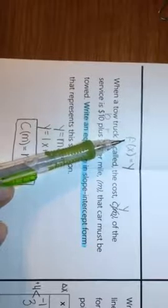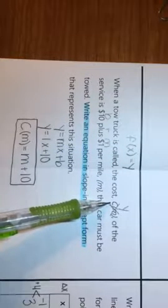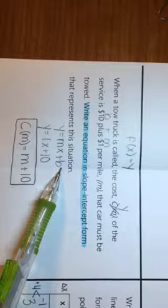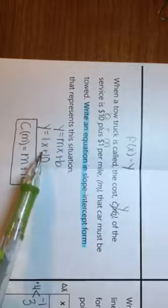So as you guys have noted here, remember F of X is equal to Y. They're the same exact thing. Here, instead of using F of X, they used C of M. And then instead of X, they used M. So we're used to writing it in this form, Y equals MX plus B. Or Y would equal 1X plus 10.